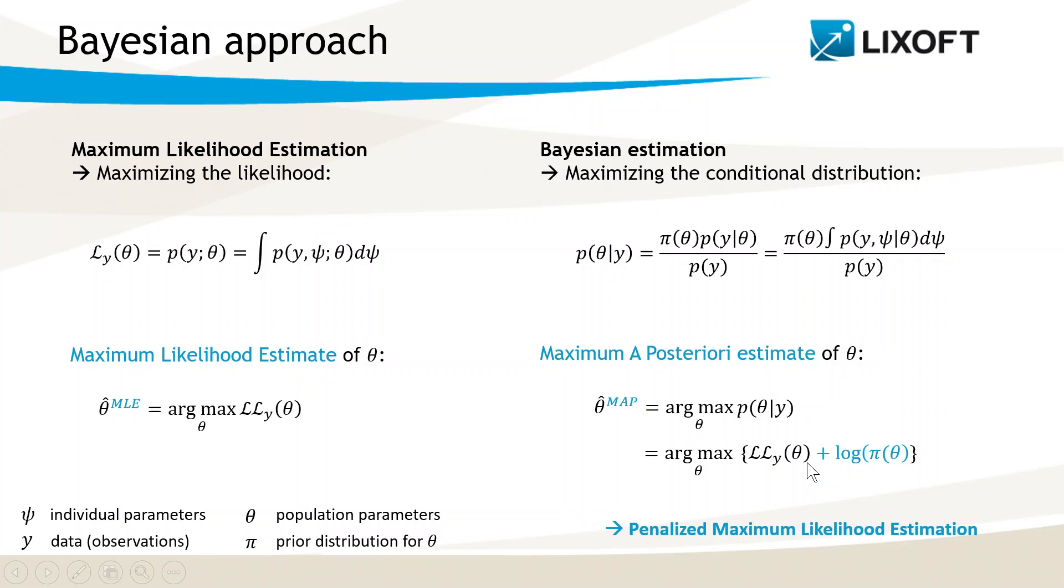So, the maximum aposteriori estimate maximizes a penalized version of the observed likelihood. In other words, maximum aposteriori estimation is the same as penalized maximum likelihood estimation. Of course, it is possible to combine maximum aposteriori estimation for some population parameters and maximum likelihood estimation for the rest.